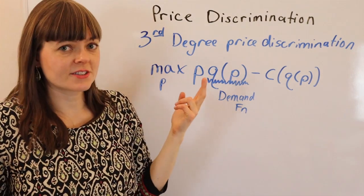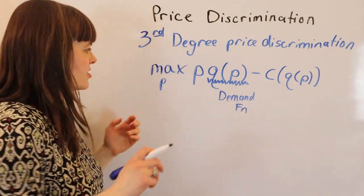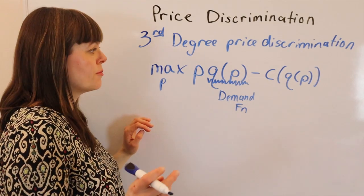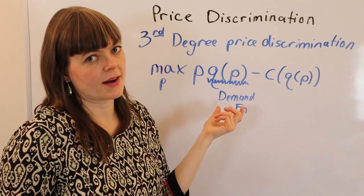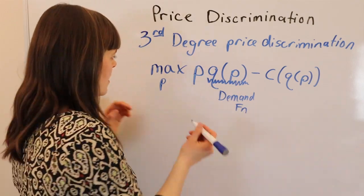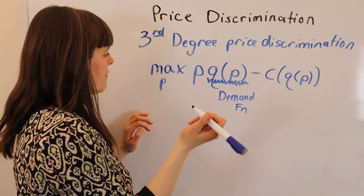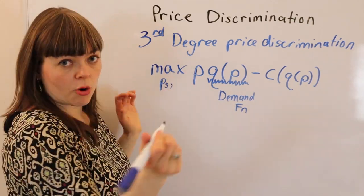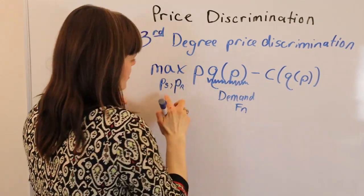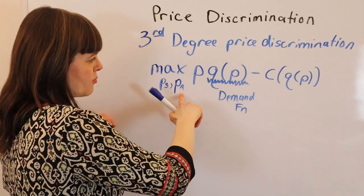Now, all you do for third-degree price discrimination is you say, okay, I can charge a different price for the two groups, and it's because I believe these two groups have different demand functions for my product. So you might have a senior citizen price and a normal price, a regular price. So we're going to have two prices: senior citizen price, regular price.